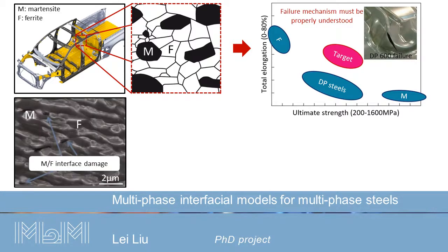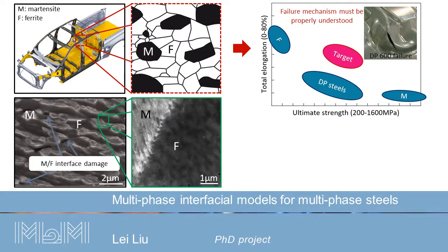In recent years, based on a large amount of experimental data, it has been concluded that the modern-side flat interface damage is actually dominating most DP steel failure and is highly correlated to its underlying microstructure and microphysics.